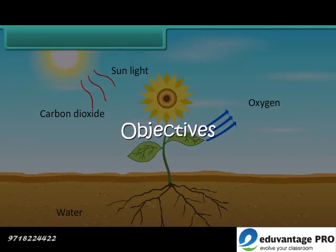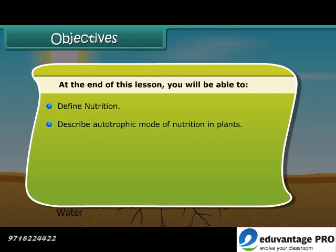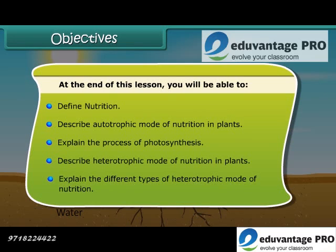Objectives: At the end of this lesson you will be able to define nutrition, describe autotrophic mode of nutrition in plants, explain the process of photosynthesis, describe heterotrophic mode of nutrition in plants, and explain the different types of heterotrophic mode of nutrition.